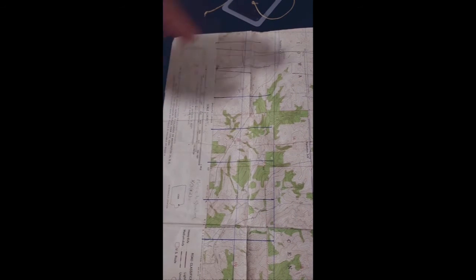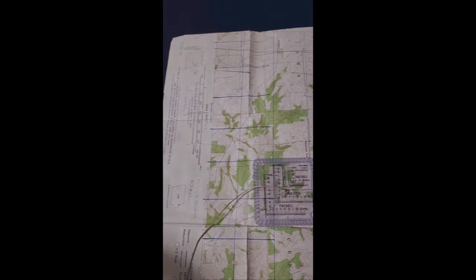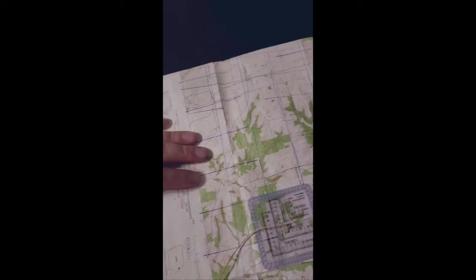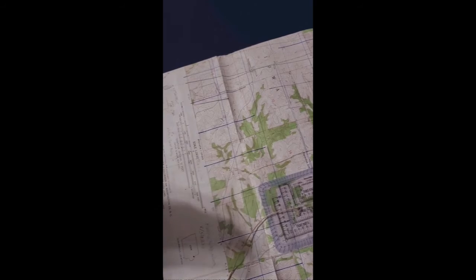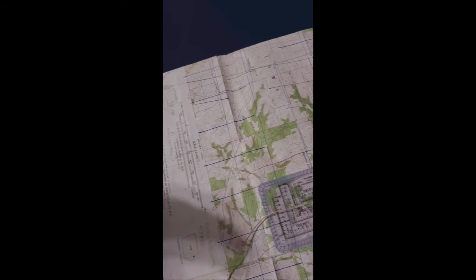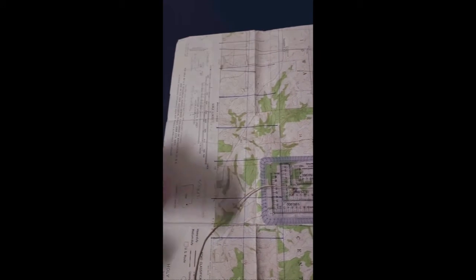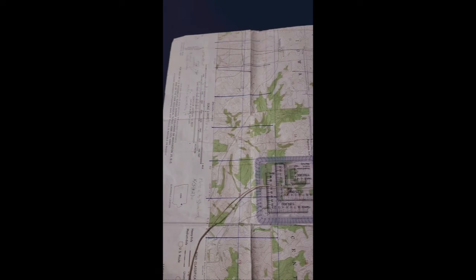Essentially what you want to do is before you read off any location or find any coordinates, you want to make sure that everybody, your map or maps, your GPS, the other people that you might be communicating with, all have the same datum. That datum, the standard that most people use, is WGS 84.